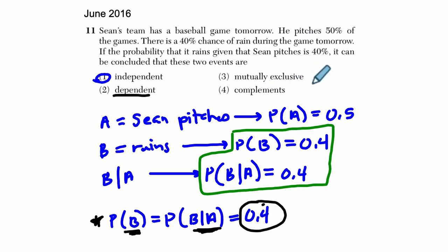Mutually exclusive means the two events can't happen at the same time. So that would just mean that the probability of A and B, this is the symbol for and, the intersection, if the probability of A and B both happening was zero, if they could not both happen,